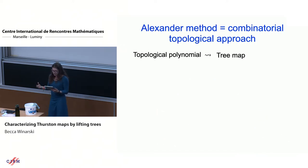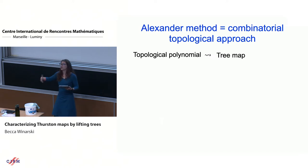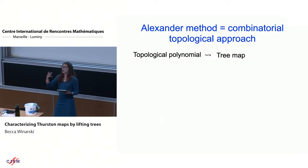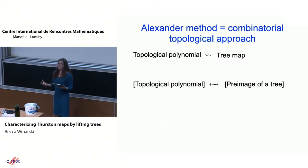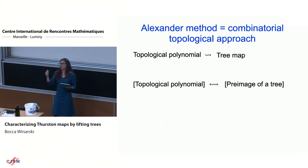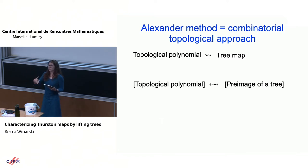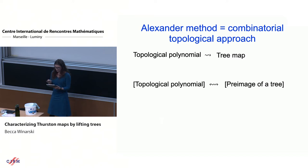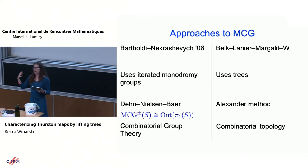The Alexander method is a combinatorial-topological approach to understanding mapping classes and branched covers when viewed as higher-dimensional mapping classes. Specifically, we view a topological polynomial as a tree map. The equivalence class of a topological polynomial corresponds to the equivalence class of a tree image. This correspondence holds for both isotopy classes and Thurston equivalence classes.